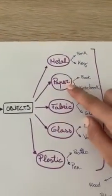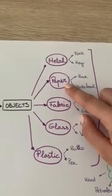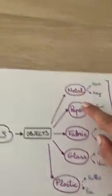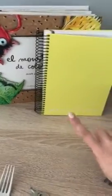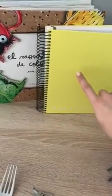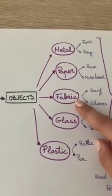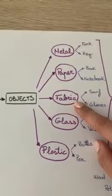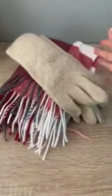Another material is paper. Some examples of things that are made with paper are a book or a notebook. Another material is fabric. Our clothes are made of fabric, like, for example, a scarf or the gloves.